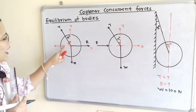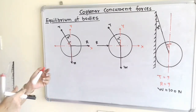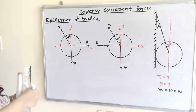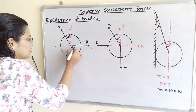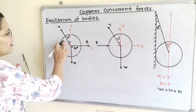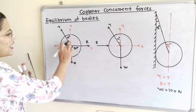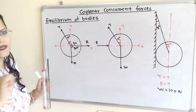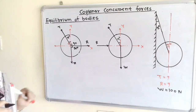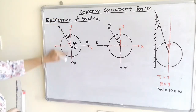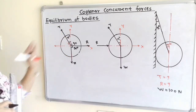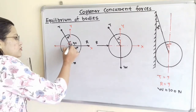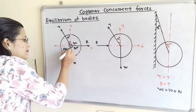We will find the angles between the three forces. R is along the X-axis and W is along the Y-axis, so the angle between R and W is 90 degrees. The angle between T and R is 90 plus 15 degrees. The angle between T and W — observing the vertical line, the total angle is 180 degrees — so the remaining angle is 180 minus 15 degrees.